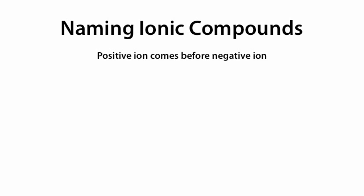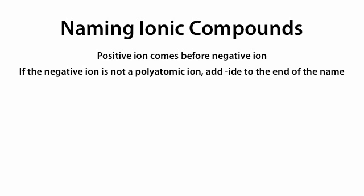Naming ionic compounds. When we want to name ionic compounds, we're going to name the positive ion before the negative ion. And if the negative ion is not a polyatomic ion, add -IDE to the end of the name.